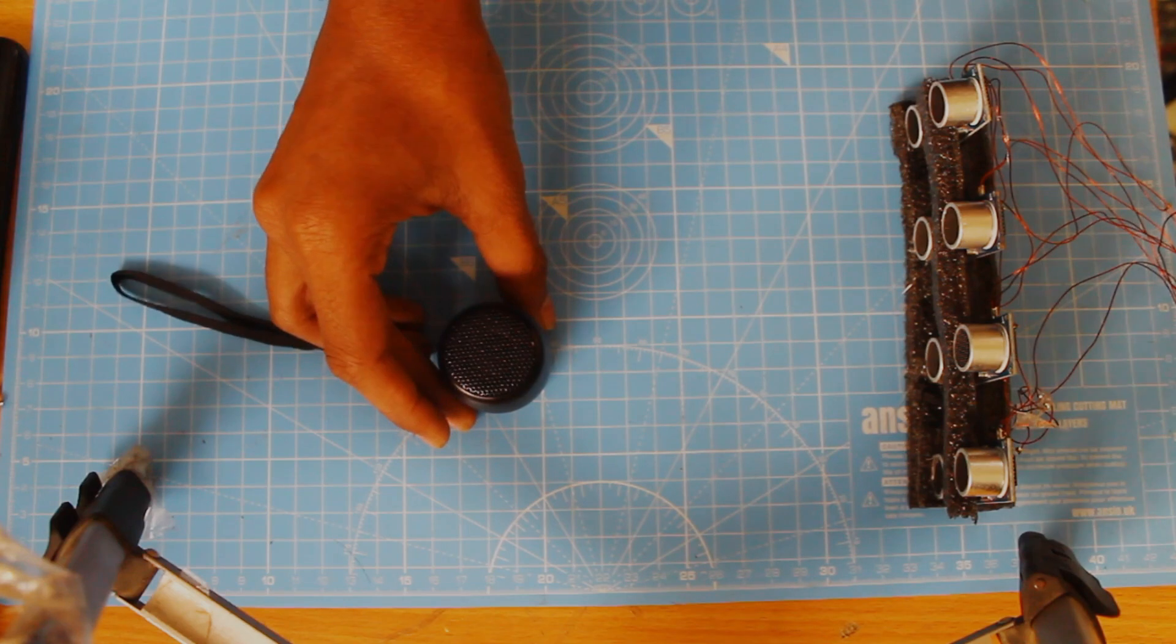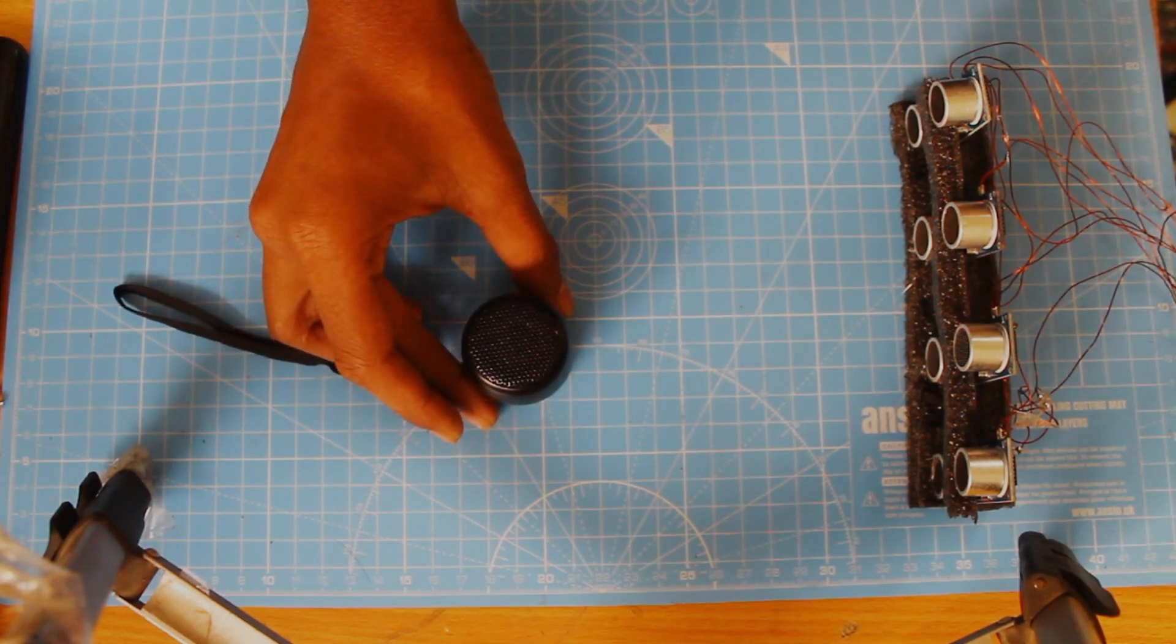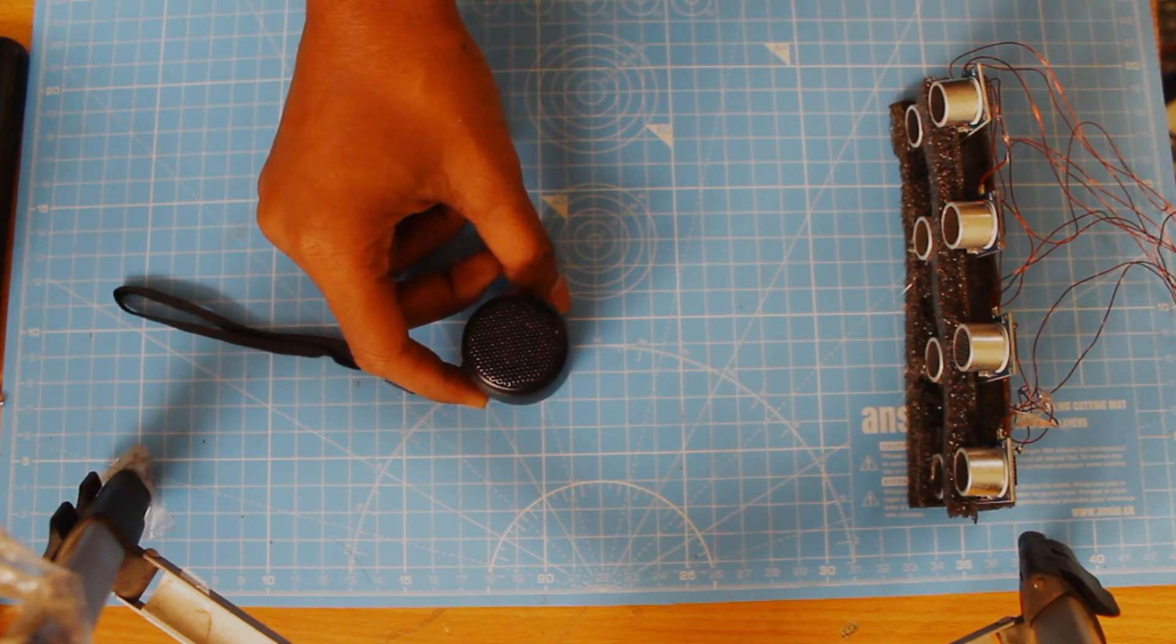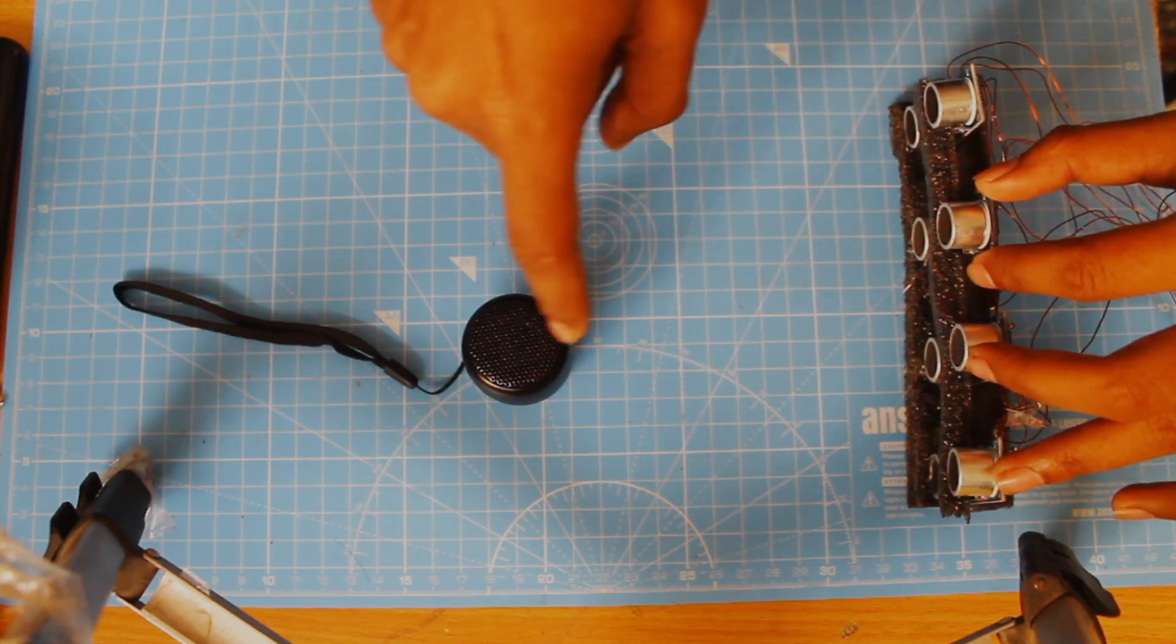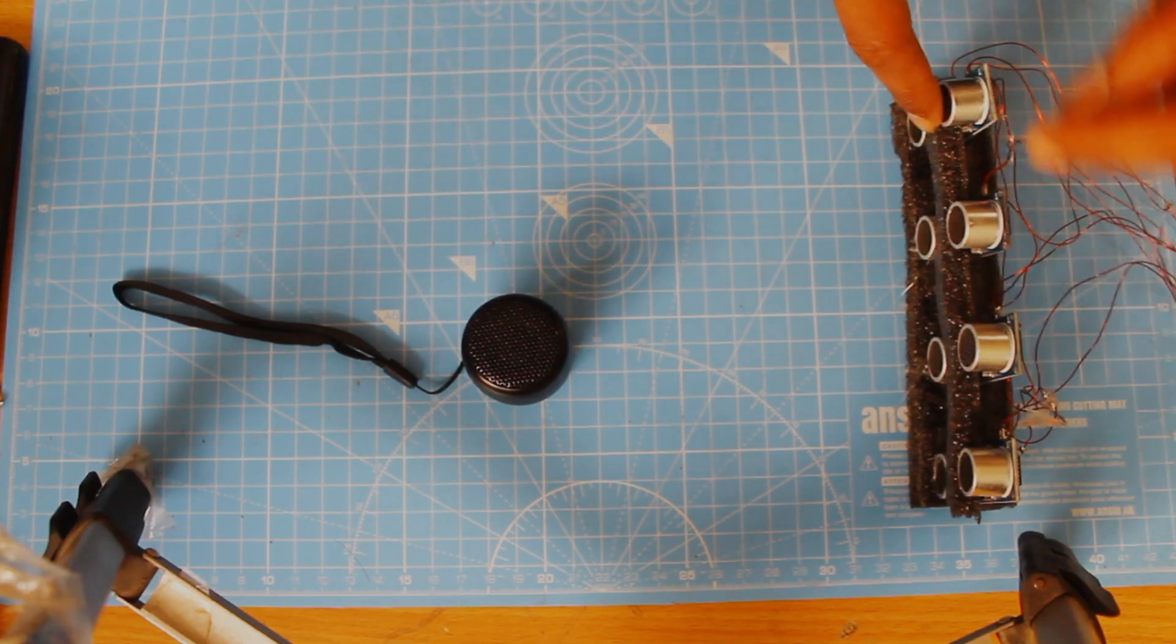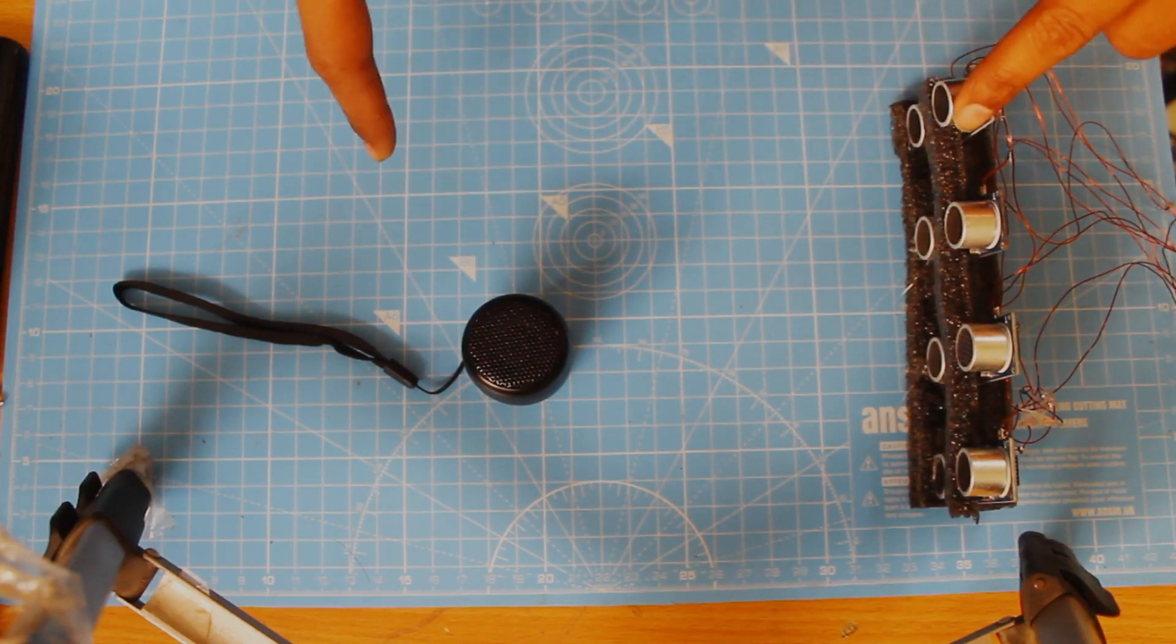But whatever we have discussed, this might be the ideal case. But in actual case, maybe our object might be somewhere over here. And maybe three sensors are able to capture our object. But it might be out of the range for our fourth sensor.